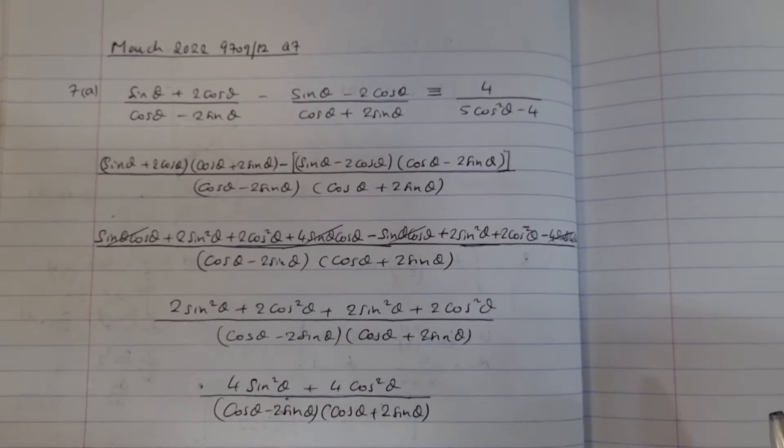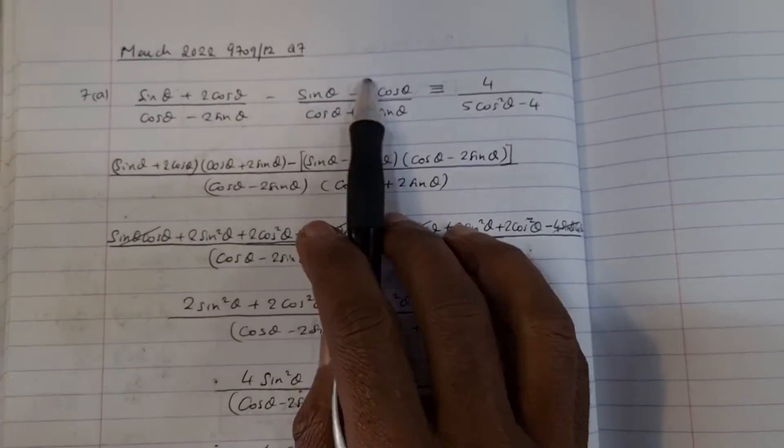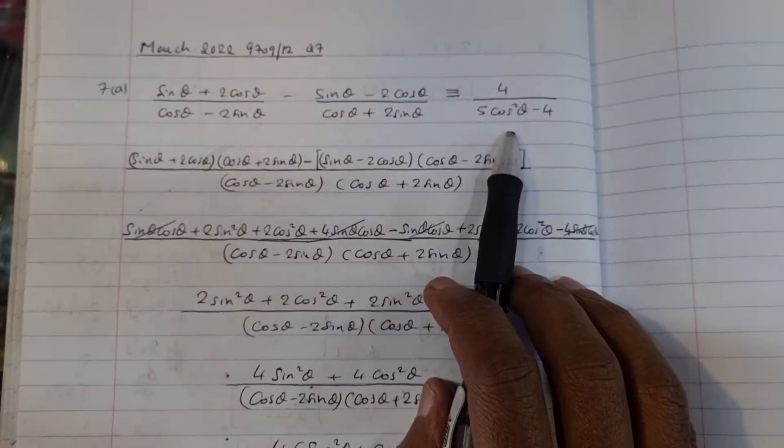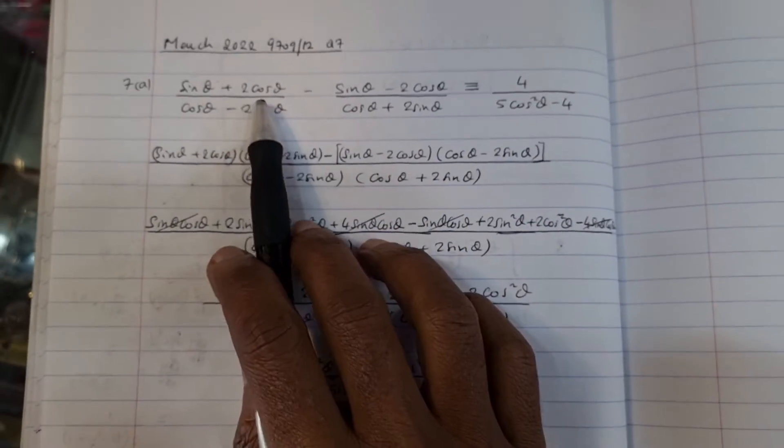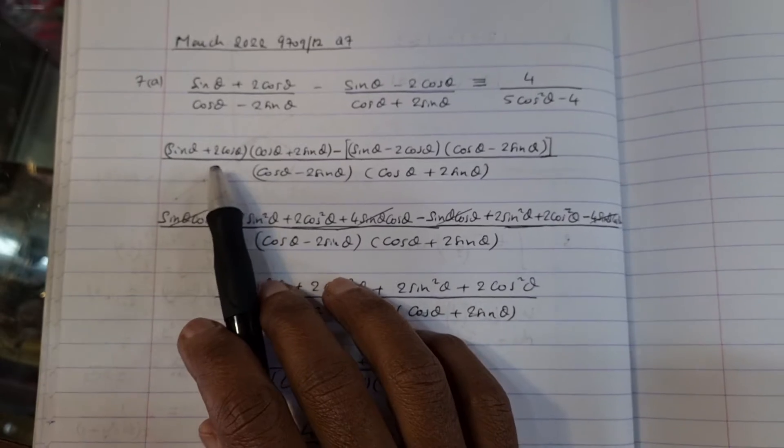Okay, as can be seen, this is question number 7, and we've got to prove that the left-hand side of the expression is equal to the right-hand side here. And therefore, what we do, we cross-multiply.